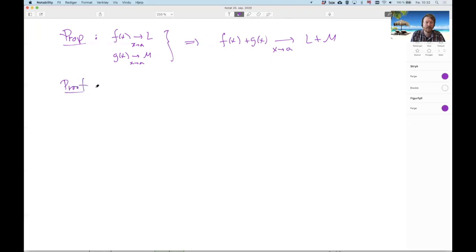So let's look at the proof of this. What do we need to show? First of all, let's take a look at what we know. We know that these things hold in terms of the definition. We know that whatever epsilon we take, we can get f of x epsilon close to L by making x close to A.